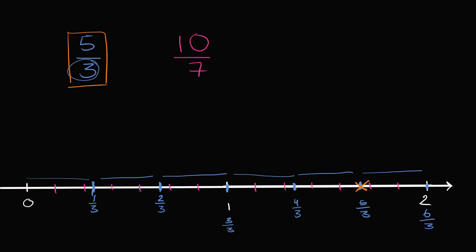Now let's think about sevenths. Now to do sevenths, I have to split the part of the number line between 0 and 1, or between each whole number, into 7 equal spaces. So you see that here: 1, 2, 3, 4, 5, 6, 7. You have 7 equal sections.